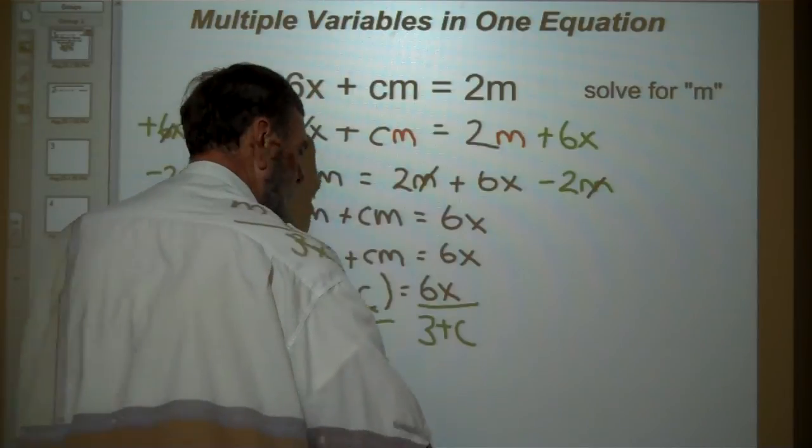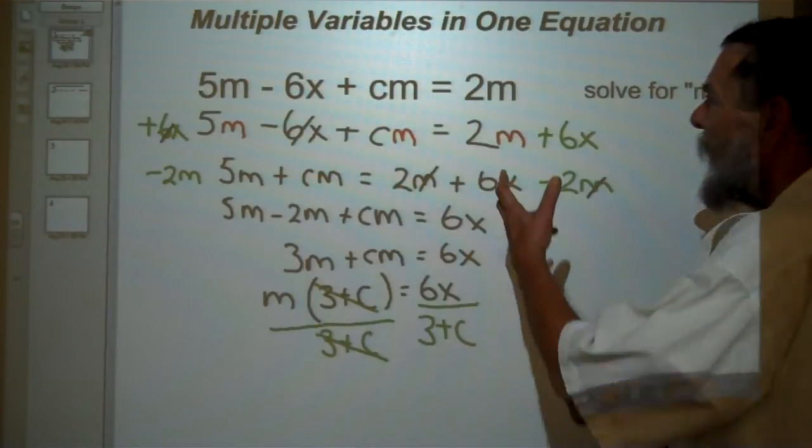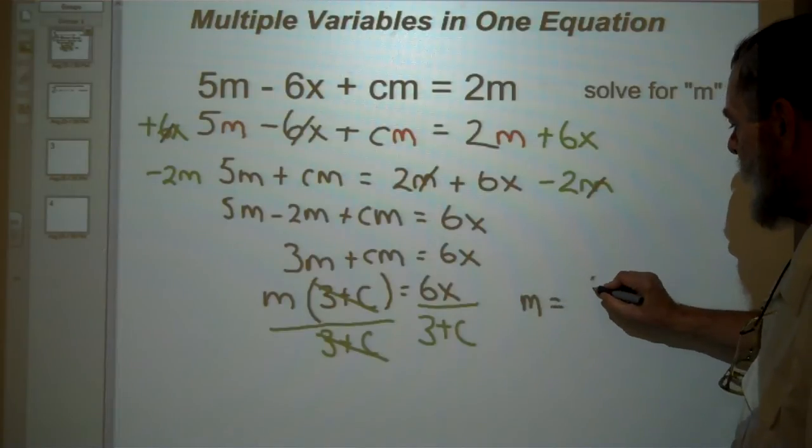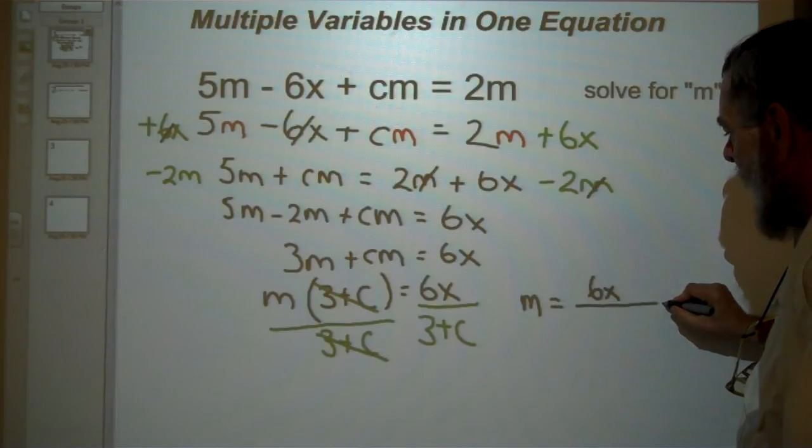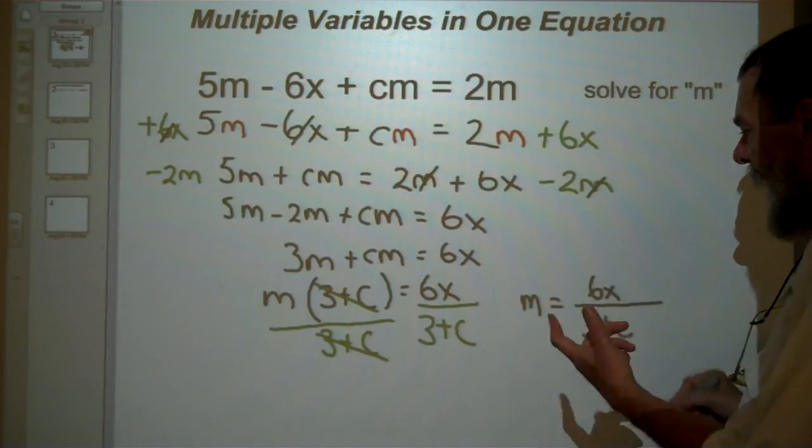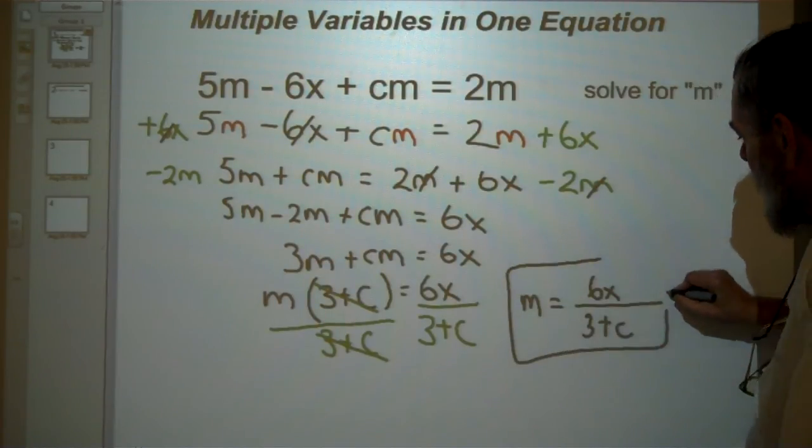So we get our final answer. What does m equal? m equals 6x divided by 3 plus c. That's it. That's all that we have left.